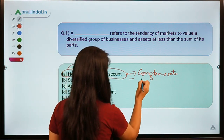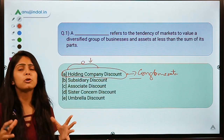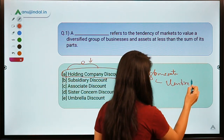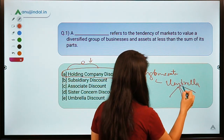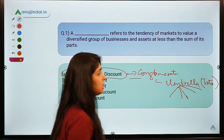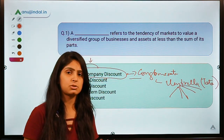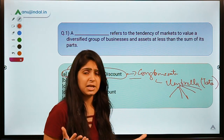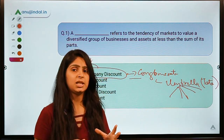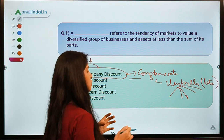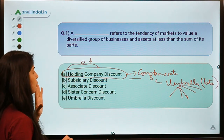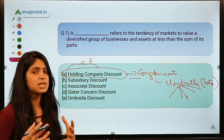A conglomerate is a group of companies — you can think of it as an umbrella company or parent company with many companies under it. For example, Tata manufactures salt, cars, steel, and a huge variety of products under the names of different companies. So we can say Tata is a conglomerate. Now, what is this holding company discount?